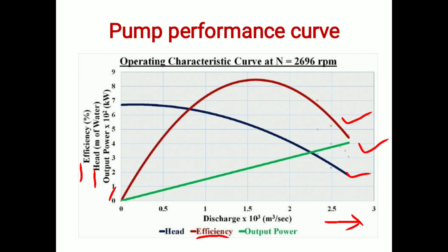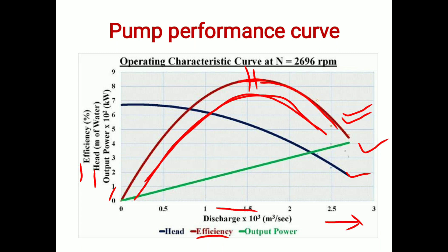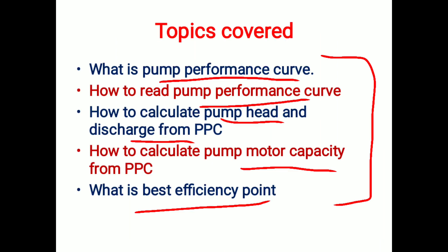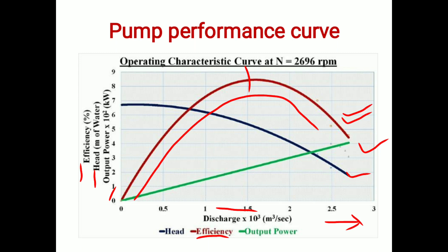On the y-axis we are plotting three parameters: efficiency, head, and output power. The first curve is the efficiency curve — the red one. The efficiency curve is a parabolic-like curve. This curve indicates that when we increase pump flow, pump efficiency increases, attains its highest point at a certain flow, and after that when we further increase discharge, efficiency decreases. This highest point is called the best efficiency point.